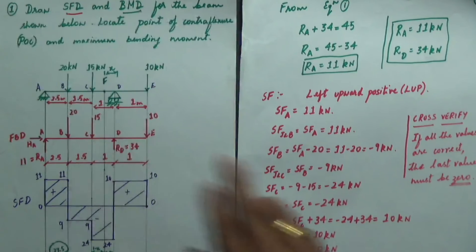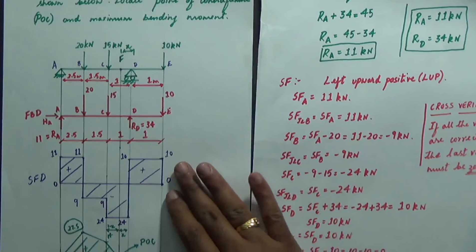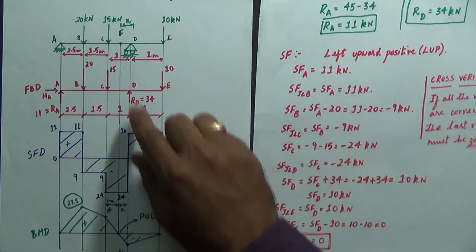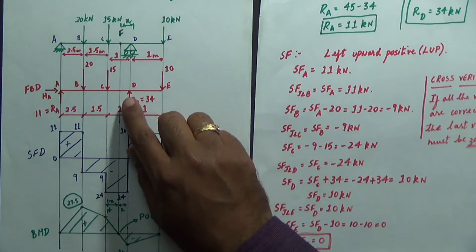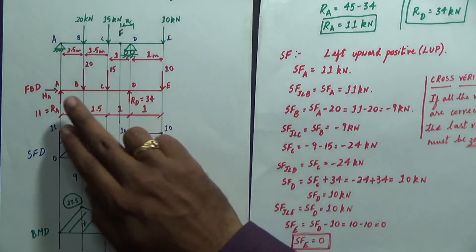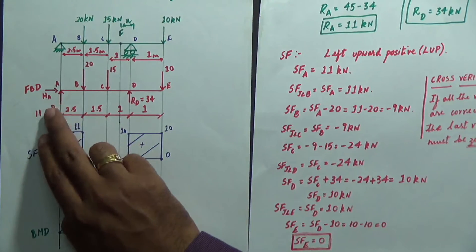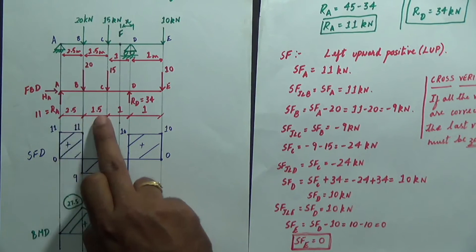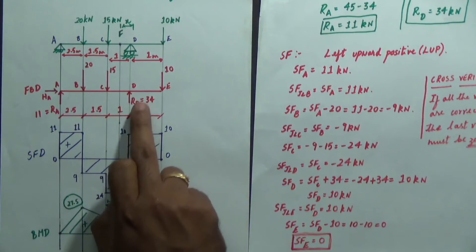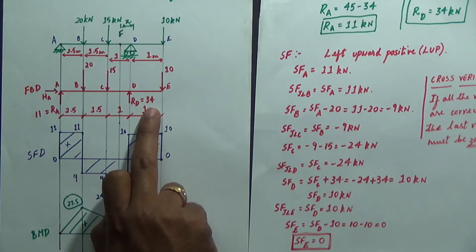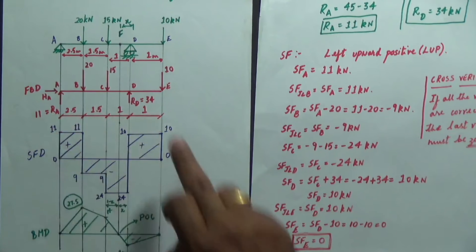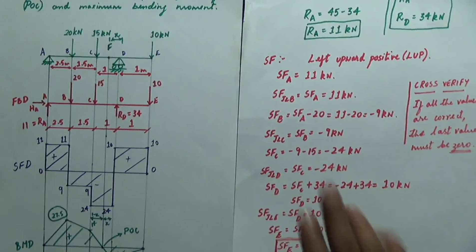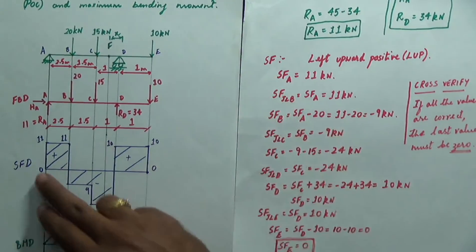For the free body diagram, use the entire sheet so it is very useful for any calculation. Show distances: 2.5, 1.5, 1, 1. Reactions are RA = 11 kN and RD = 34 kN, along with all the applied loads.